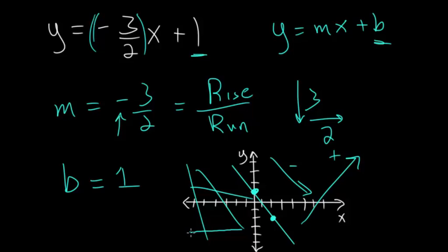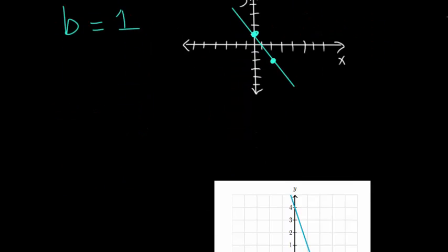A straight flat line like this would actually be a slope of 0, and then anything bigger than that is positive. Let's do one final problem so that we can be fully comfortable with this.